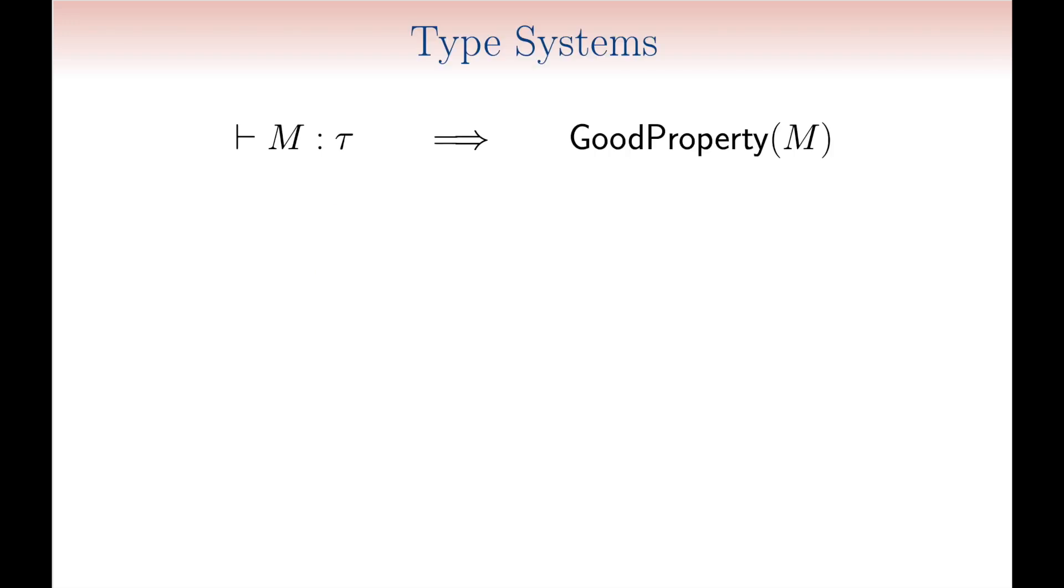Type systems are a form of compositional abstraction, but can also be seen as lightweight verification methodologies, once a soundness theorem is proved stating that typable programs are guaranteed to satisfy some desirable property.